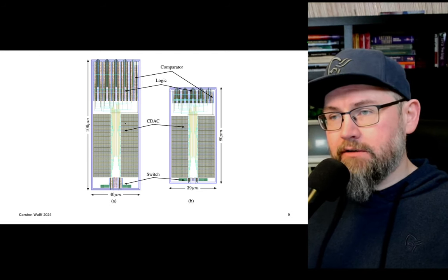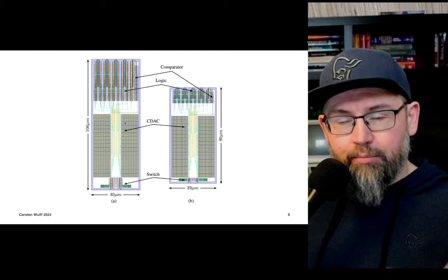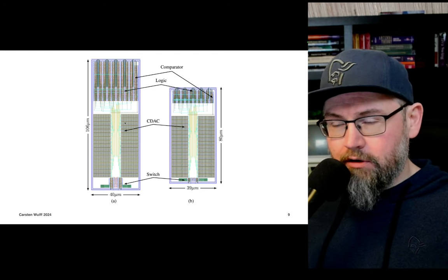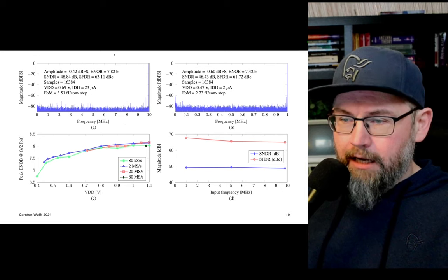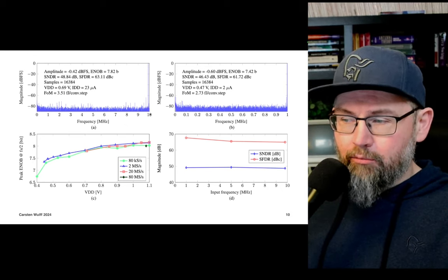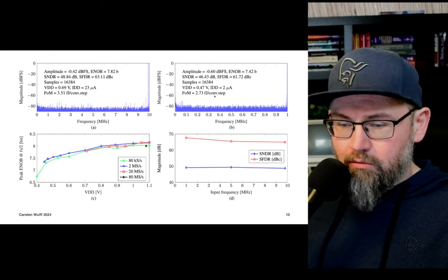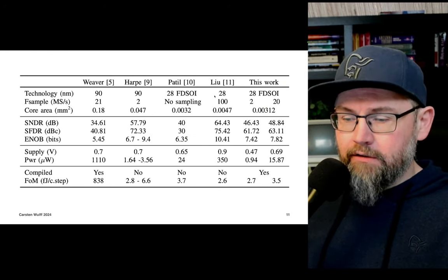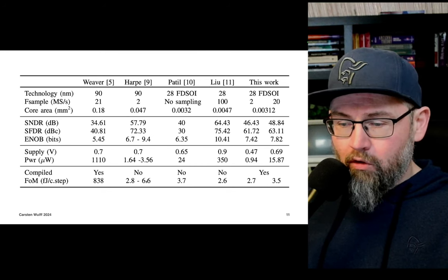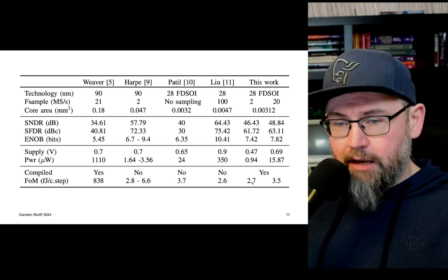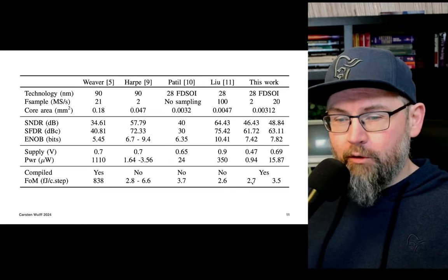In any state-of-the-art design you want to publish in tier-1 journals, it's not enough to have a single new thing — you need multiple things. Once you get the chip back and measure, the input signal close to Nyquist at 20 MHz and at 1 MHz shows the figure of merit around 2.7 femtojoules per step, comparable to other state-of-the-art designs at the time like Peter Harper's. But I don't think that alone would have been enough to get this paper in — there had to be something else.